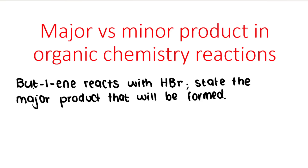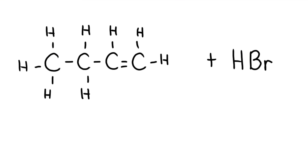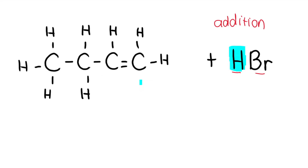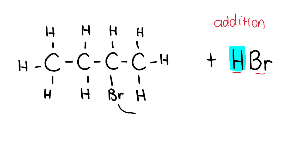If I tell you that but-1-ene reacts with hydrogen bromide, HBr, this would be an addition reaction. Why? Because I'm going from something that has double bonds — there's space here to add atoms. If I break the double bond, I create a single bond, then I can add something here and add something here. So it's called addition. There's a potential to add the hydrogen either to this carbon or to this carbon.